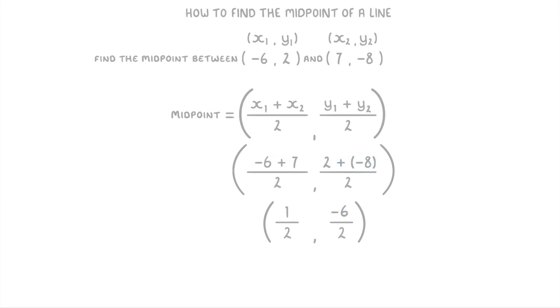And that leaves us with a midpoint of (1/2, -3). One thing to mention here though is that because our x-coordinate wasn't a whole number this time, it's up to you whether you want to leave it as a fraction or change it to a decimal. So we could also have written our answer as (0.5, -3).